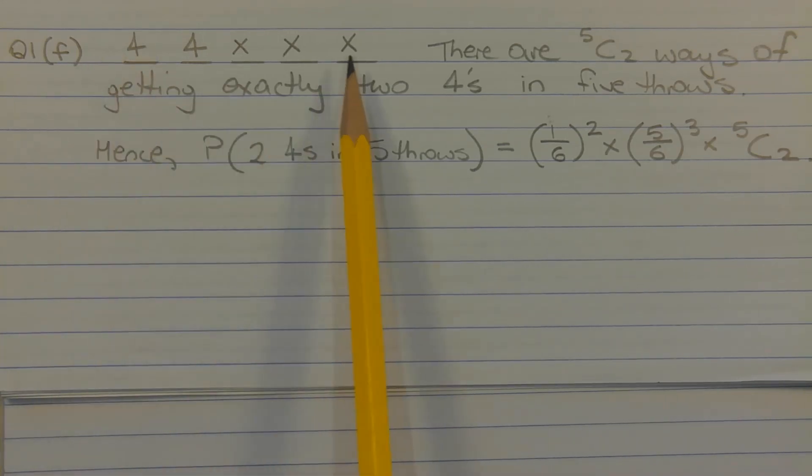Now one possibility is rolling a four on the first and second rolls and not rolling a four on the third, fourth, and fifth rolls. So the probability of that particular occurrence is one over six to the power of two times five over six to the power of three.